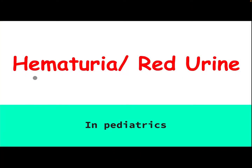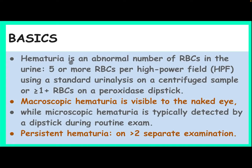Our subject today is hematuria in pediatrics. Hematuria is an abnormal number of RBCs in the urine — 5 or more RBCs per high power field — using a standard urine analysis on a centrifuged sample, or 1 or more plus RBC on peroxidase dipstick. Macroscopic hematuria is visible to the naked eye, while microscopic hematuria is typically detected by dipstick urine routine exam.